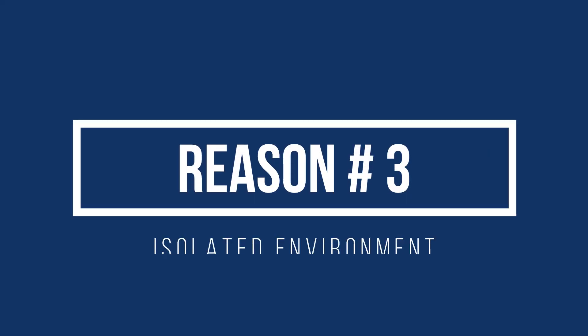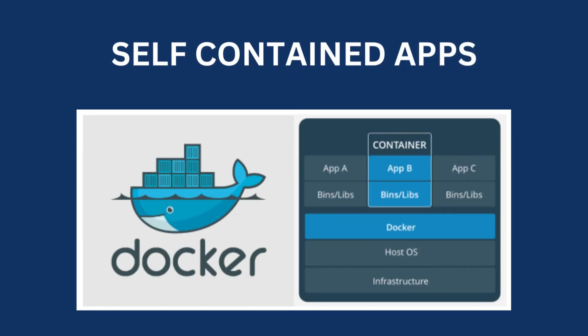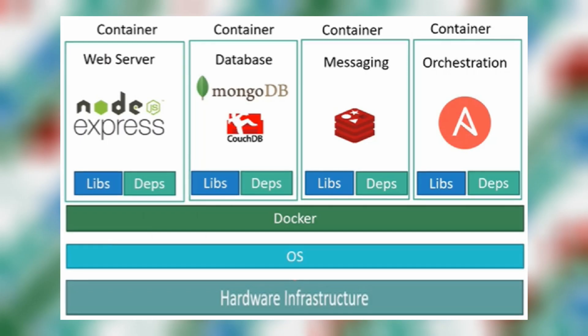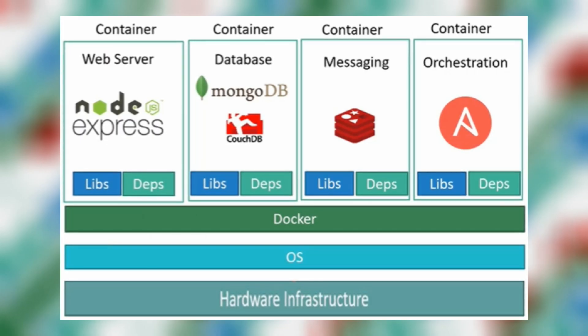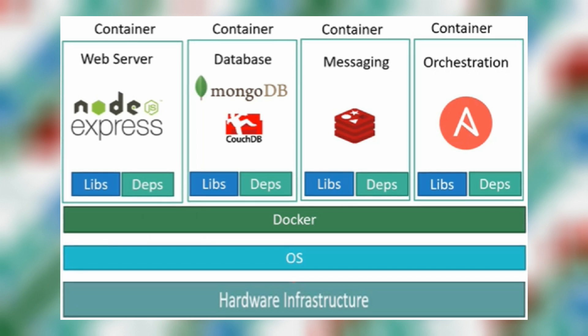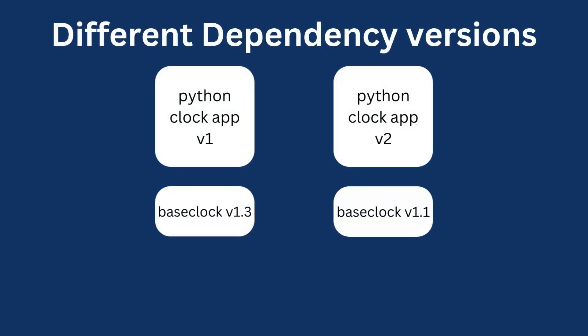The third reason for me is isolation. Because Docker apps are self-contained, you can run multiple versions of the same app without any problem. You can package dependencies with the app and run them in parallel without ever interfering with each other. This isolation is also helpful if you use two apps that require different versions of the same library.